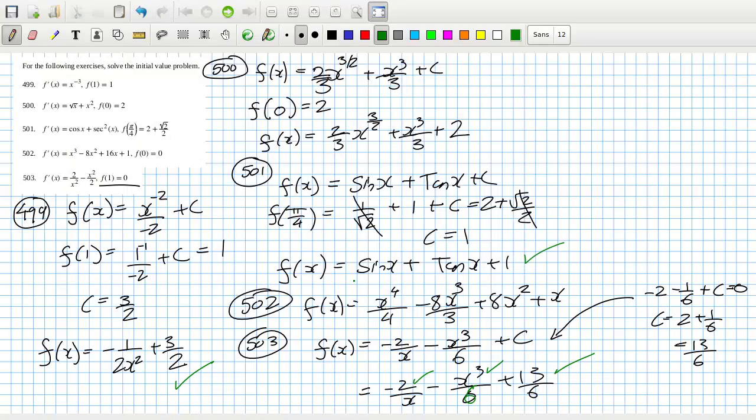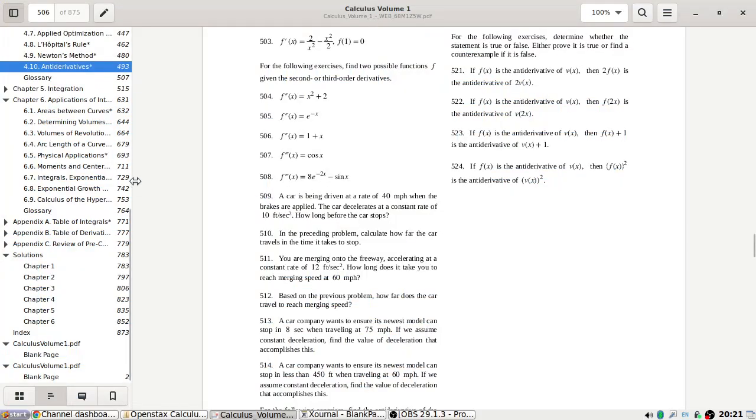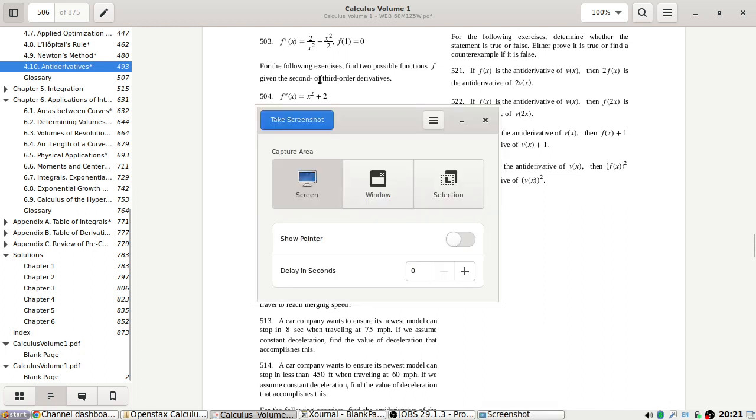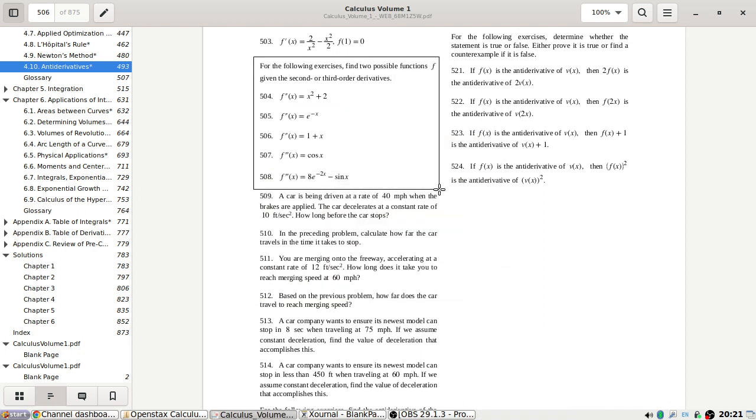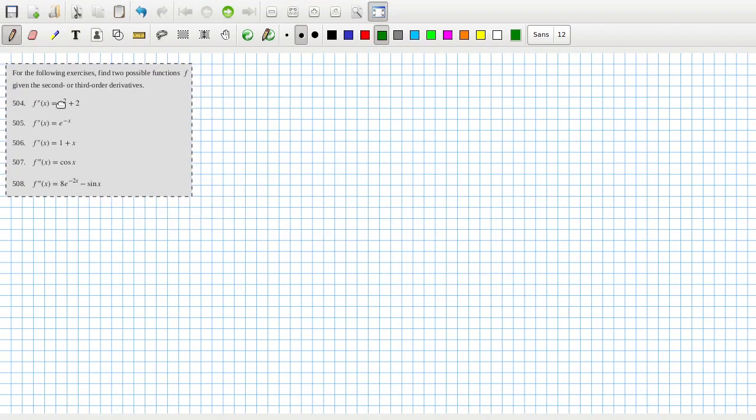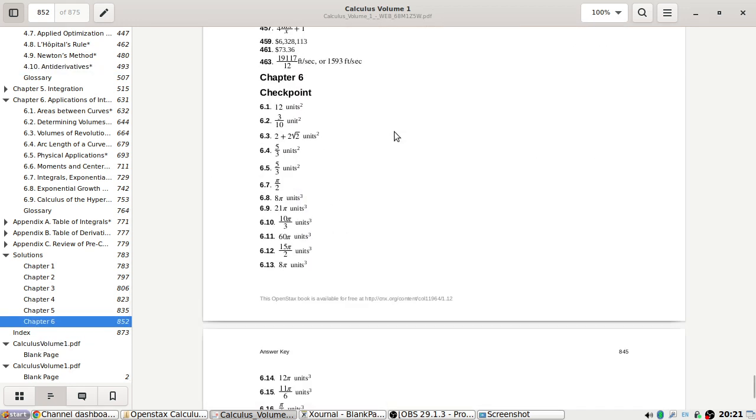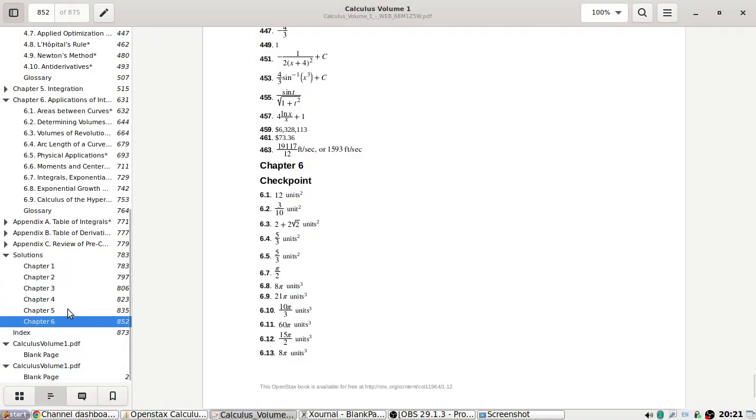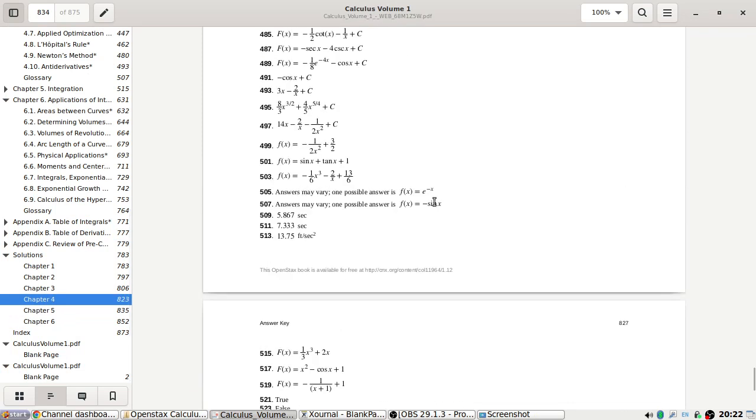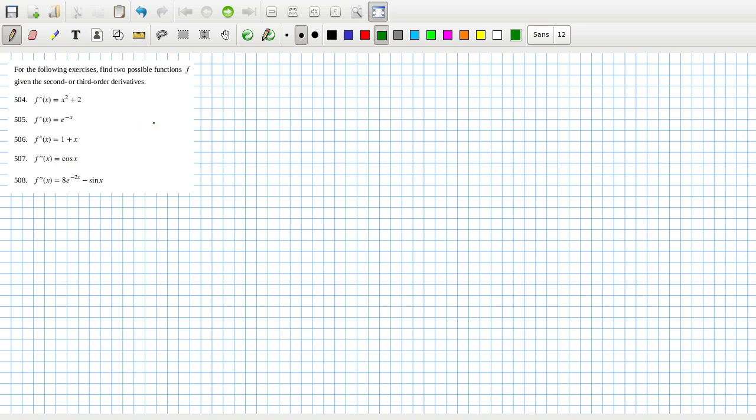Interesting, I'm not quite sure what's going on with the next few but maybe I can have a look at them. For the following exercise find two possible functions given the second or third derivatives. How do they want the answer though? Just put any old value of c in I guess. All right whatever. So 504: